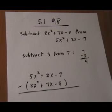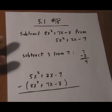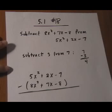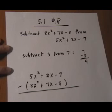Number 18. Here we want to subtract 8x squared plus 7x minus 8 from 5x squared plus 2x minus 7.